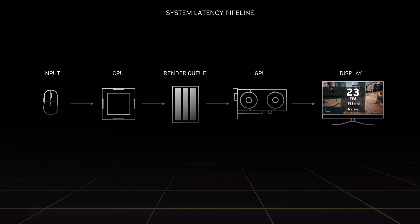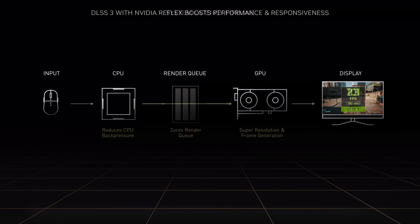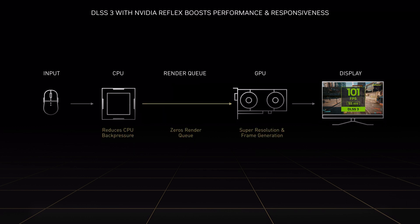It turns out there's a lot of latency in a traditional game rendering system because we're queuing up work for the GPU in order to keep the FPS high. We call this the render queue. With NVIDIA Reflex, we're able to zero that out and reduce system latency by up to 2x. Here's an example of DLSS 3 settings in a game UI.